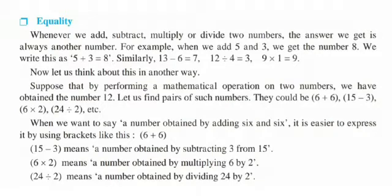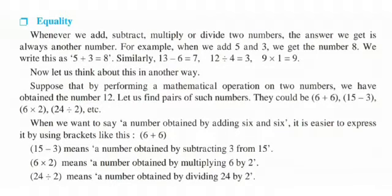Now let us think about this in another way. Suppose that by performing a mathematical operation on two numbers, we have obtained the number 12. It means use any two numbers with one operation and obtain the number 12. Let us find pairs of such numbers. They could be 6 plus 6, 15 minus 3, 6 multiplied by 2, or 24 divided by 2. So these are 4 pairs of such numbers.